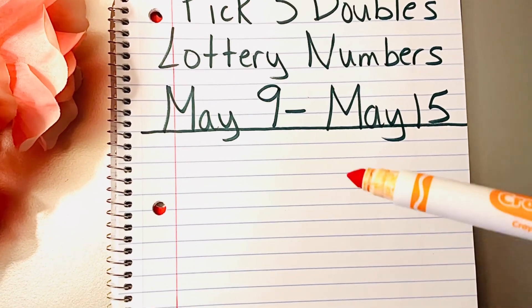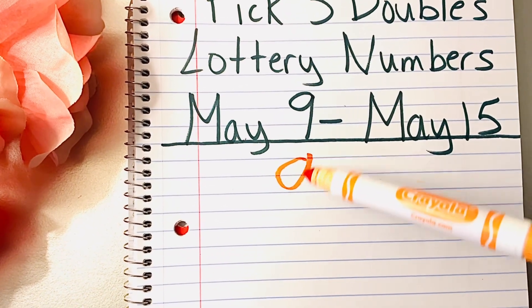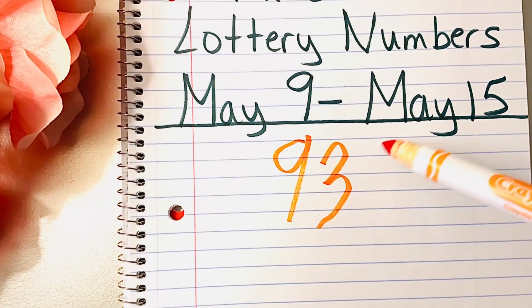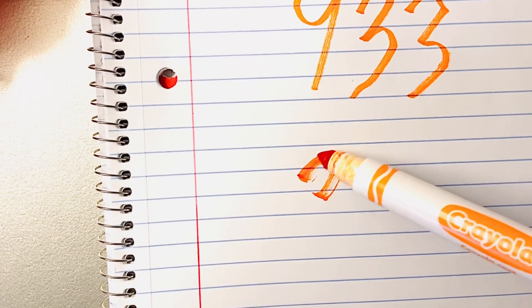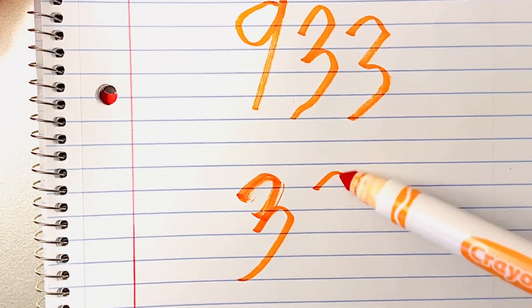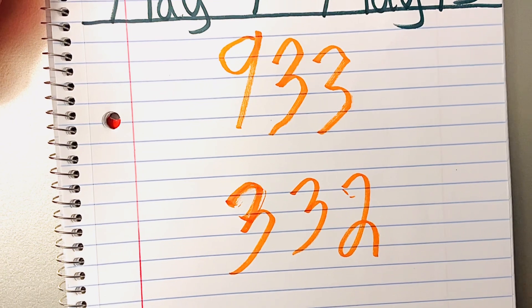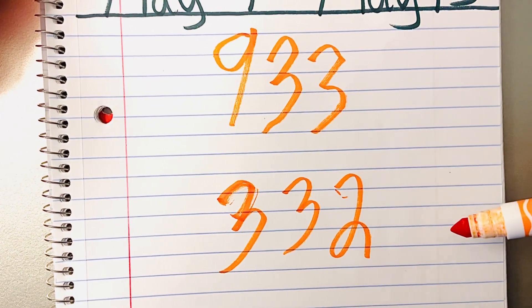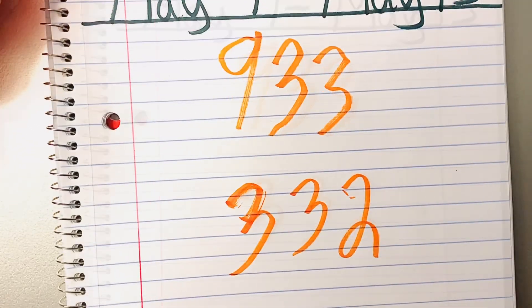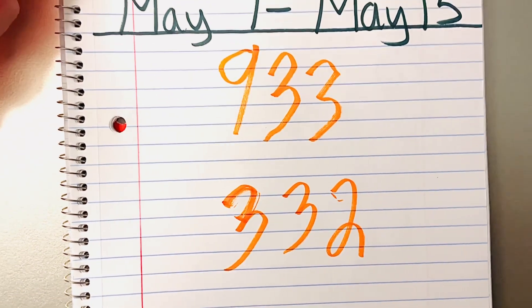We have our double threes next. And that's 933 and 332. Now these two numbers, they don't really have anything in common, I would say. So you would basically have to select between these two. If a 9 hasn't fell in a while, then play 933. Or vice versa, if a 2 hasn't fell in a while, I would pick 233.